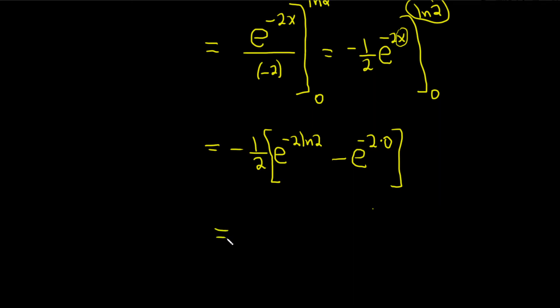This is equal to negative 1 half bracket. So this negative 2 can come upstairs using the power rule for logs. This is e to the natural log of 2 to the negative 2. We did that because these will cancel now in the next step. Minus, this is just e to the 0, which is 1.